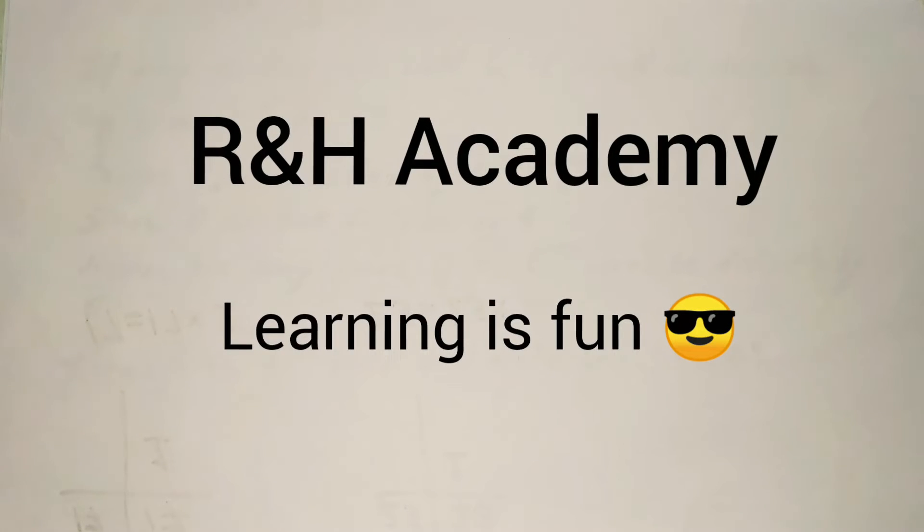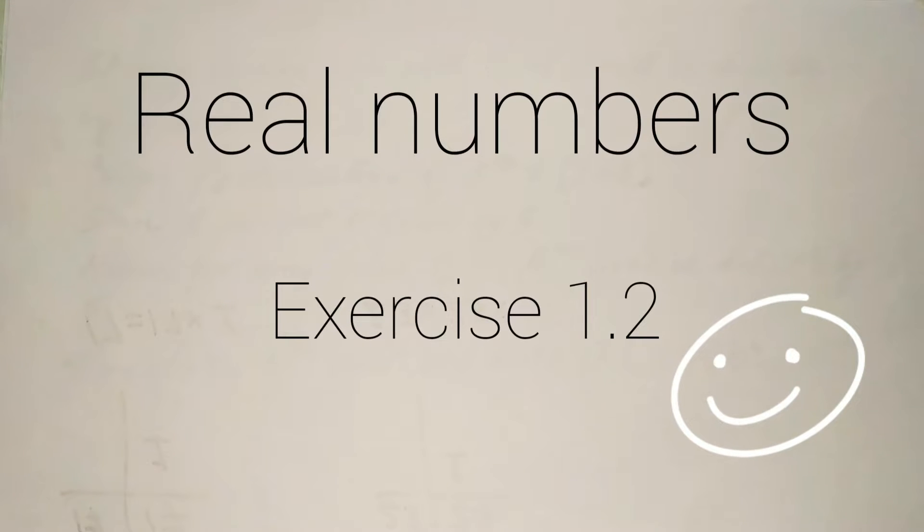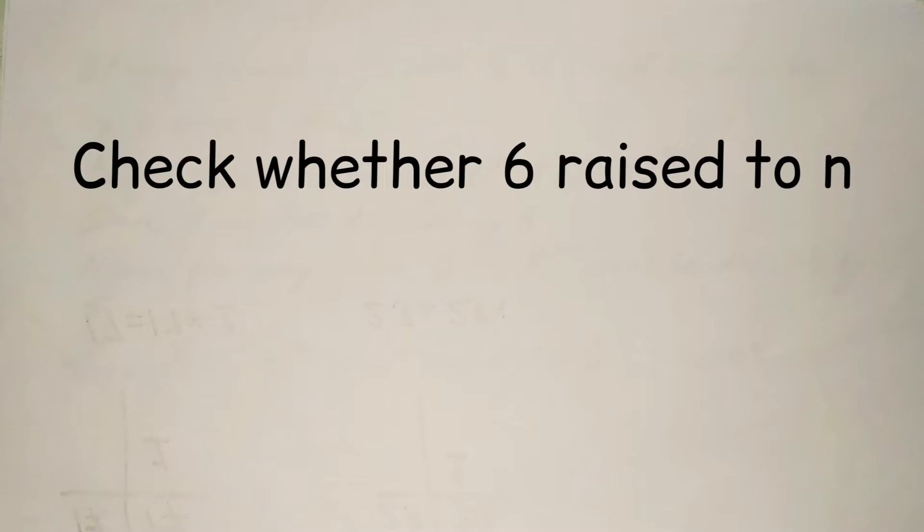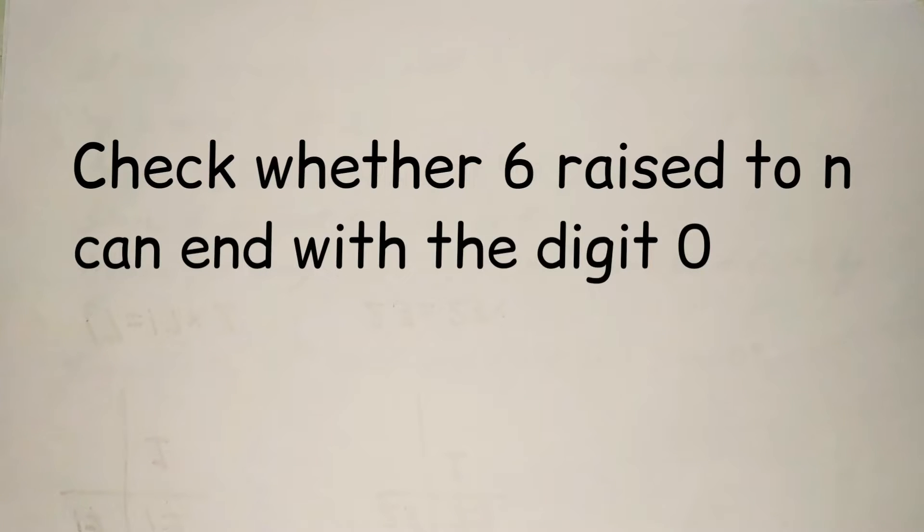Hello everyone, welcome to R&H Academy channel. Today we will solve question 5 of exercise 1.2. It says, check whether 6 raised to the power n can end with the digit 0 for any natural number n.